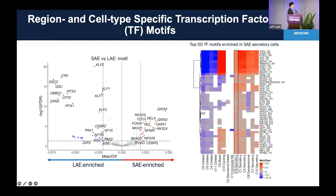We looked at what transcription factors are relatively specific to this population because we want to know the specific regulatory elements that regulate small airway secretory cells. We found that NKX2.1, NKX2.2, and NKX2.4 — specifically the NKX2 family — are relatively specific to this small airway secretory cell population.